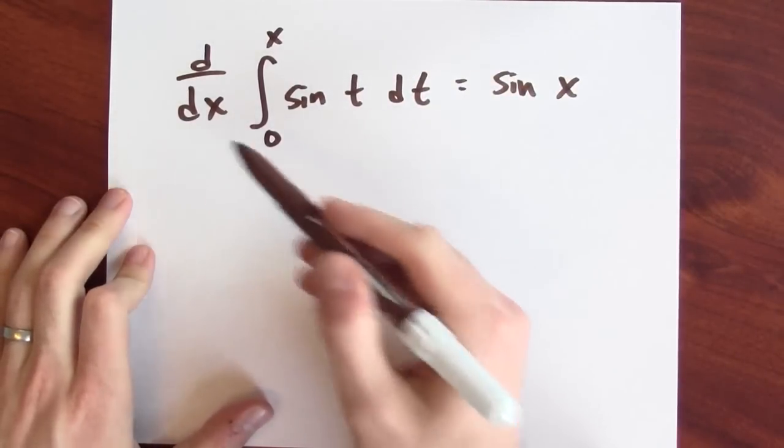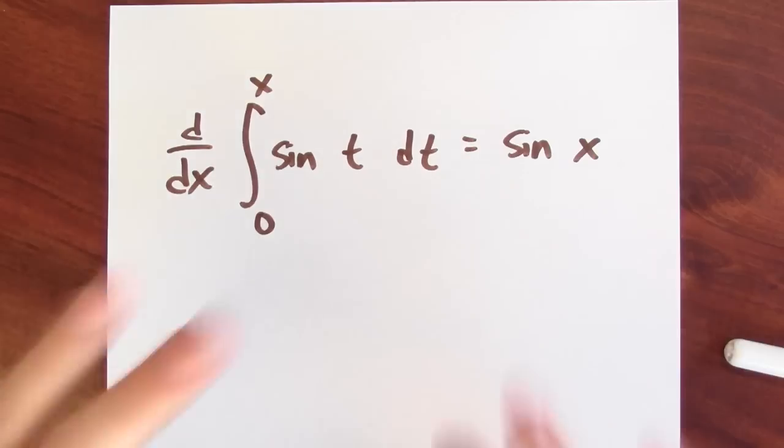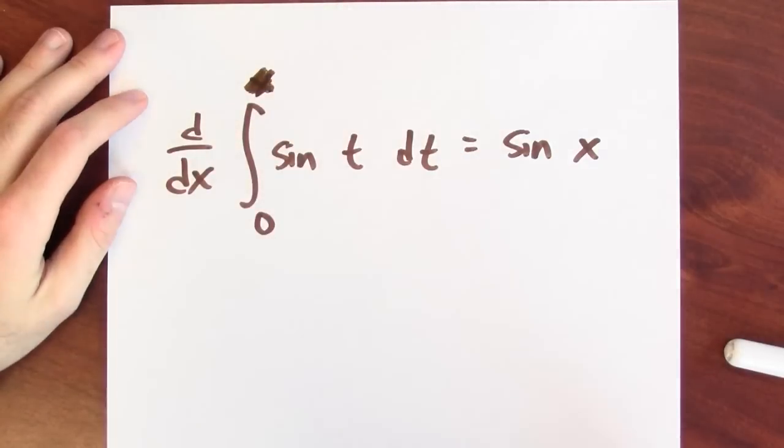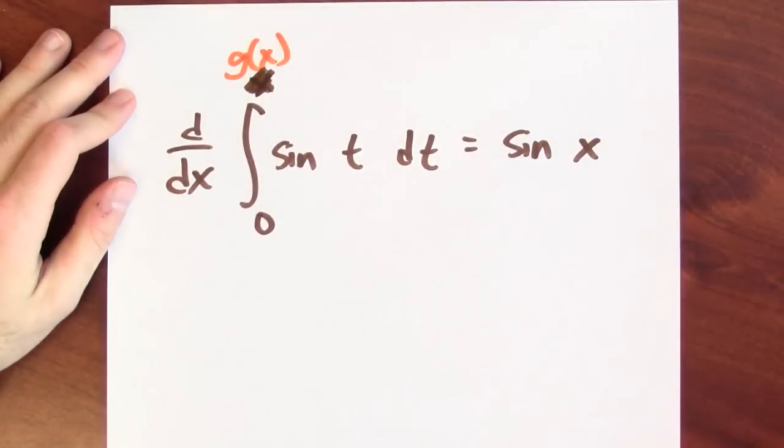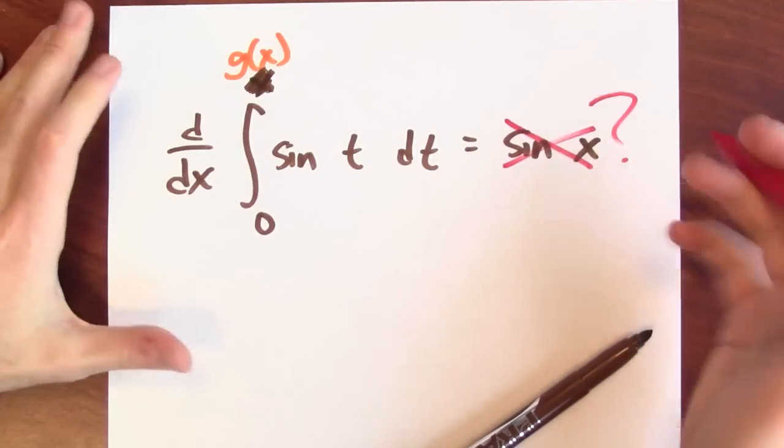What if that upper endpoint were a function of x? What I'm asking is, what if this endpoint weren't x anymore, but some function g of x? Then this wouldn't be sine of x anymore, it'd be something else.